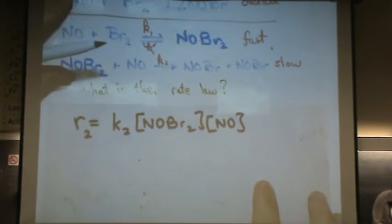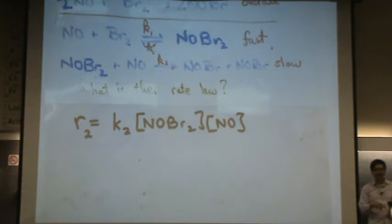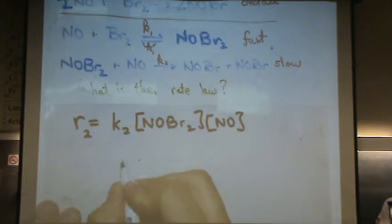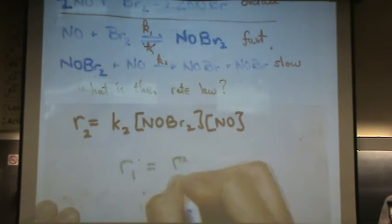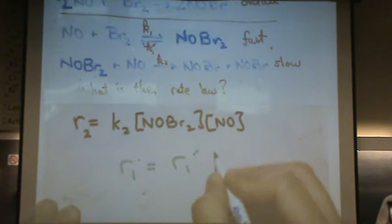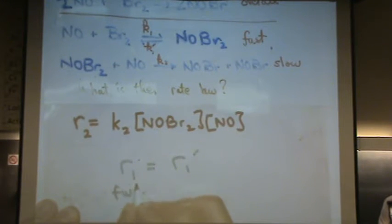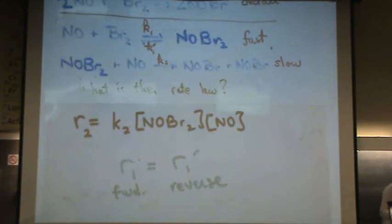So here's where it gets complicated. Now I have to access the fast step. And what's true about fast steps is the following. For a fast step, the rate of the forward reaction equals the rate of the reverse reaction. Forward equals reverse. That's going to be true for fast steps.